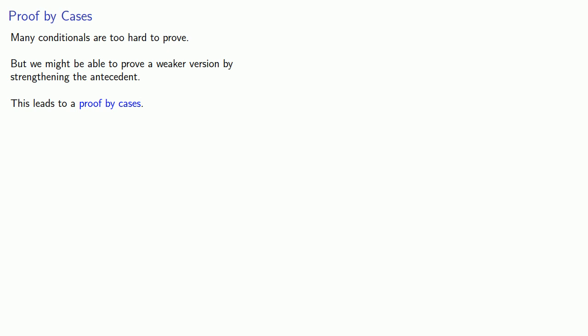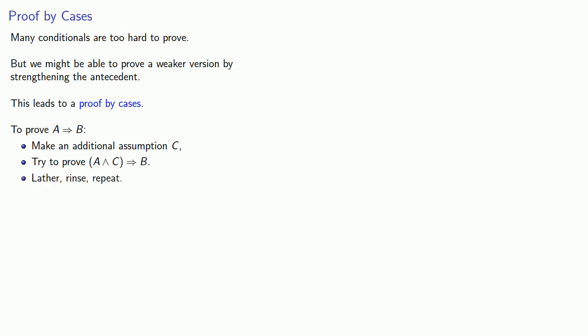And this leads to what's known as a proof by cases. So if I want to prove the conditional 'if A then B,' I'll make some additional assumptions C, and then I'll try to prove 'if A and C, then B' — and repeat. And if the additional assumptions include every possibility for A, we have completed a proof by cases.